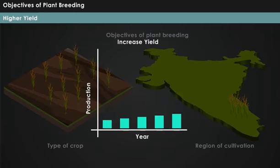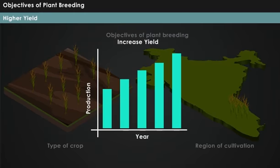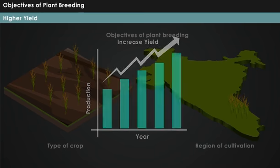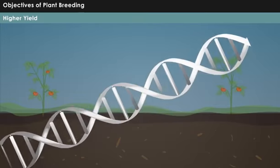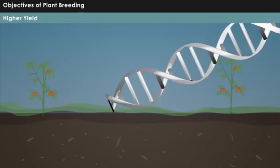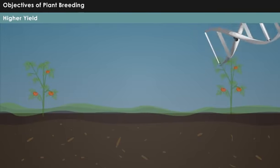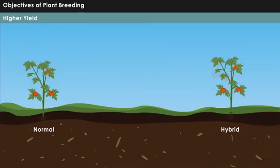Higher yield: Basically, the most important objective of any plant breeding program is to obtain a better yield. By developing more efficient genotypes, such as hybrid varieties, the yield can be increased to a great extent.